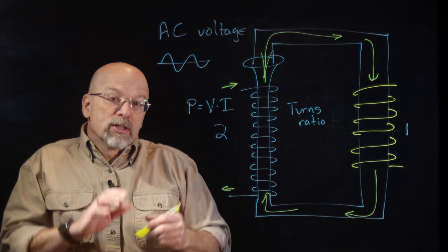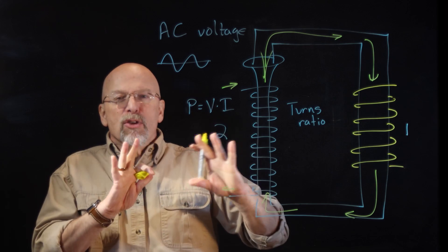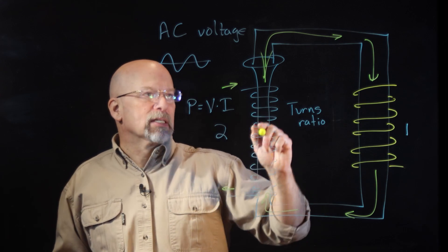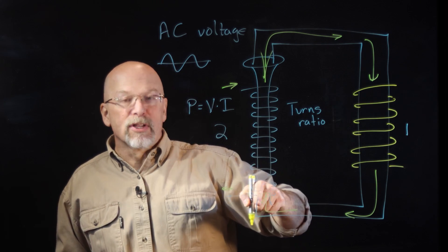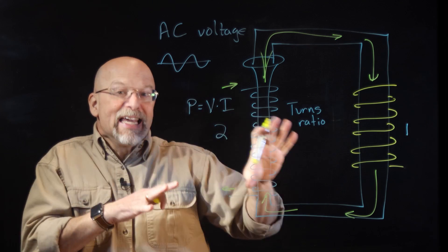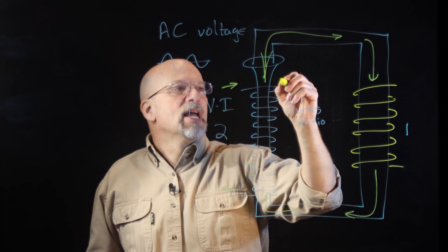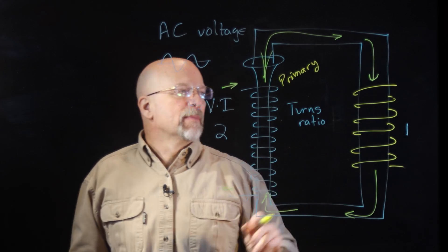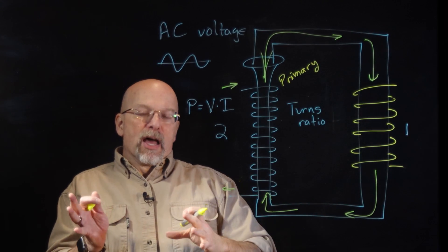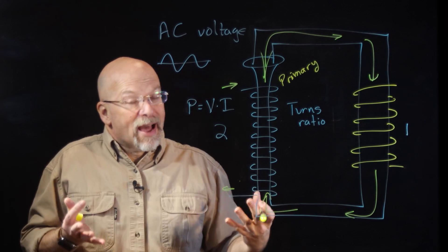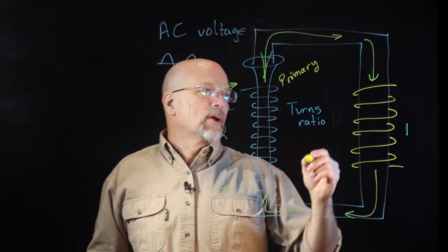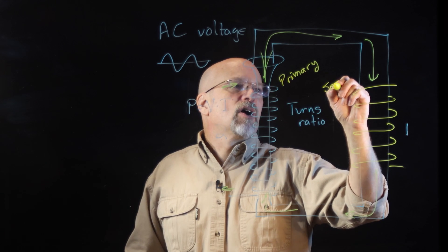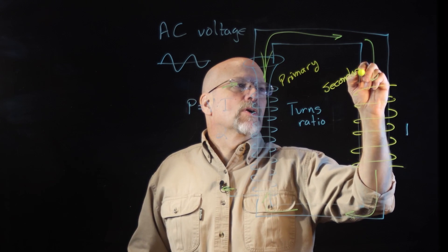Now real quick before we go on to anything else, I want to give you a name for these different pieces. This side right here, this coil right here, the one that's getting or receiving the power is referred to as the primary coil. This one that is absorbing the electromagnetic fields in order to have that generate voltage and current, that guy is called the secondary.